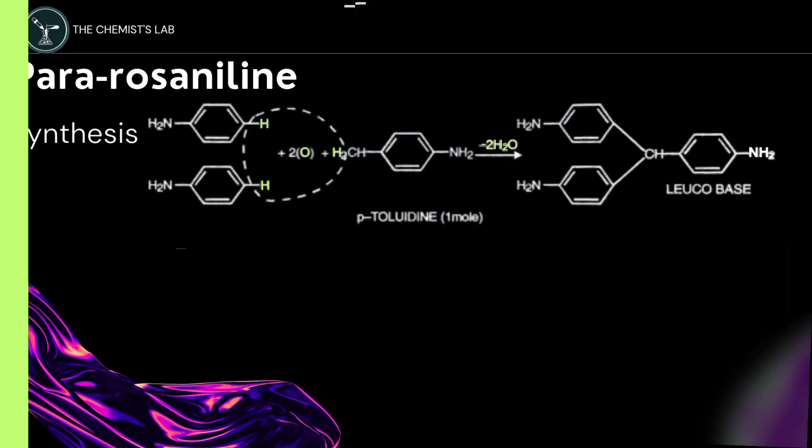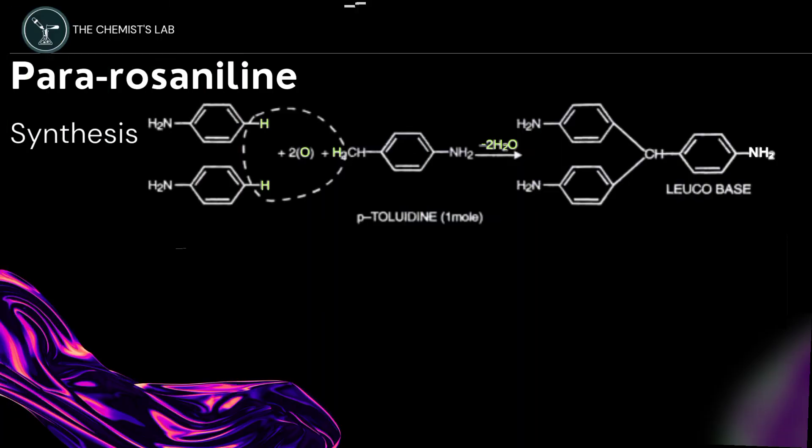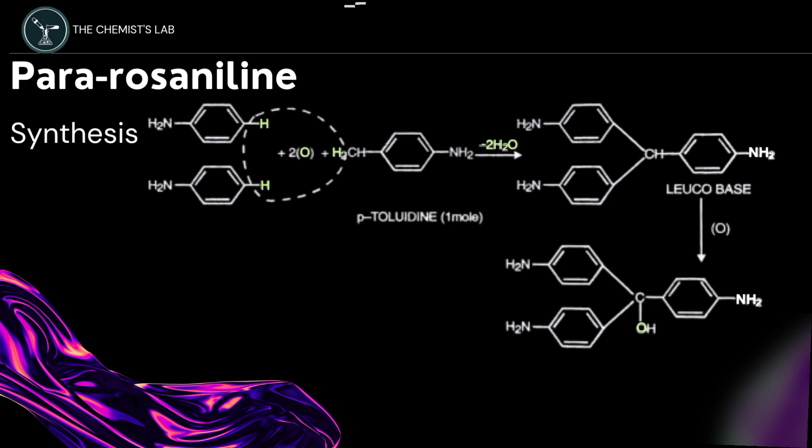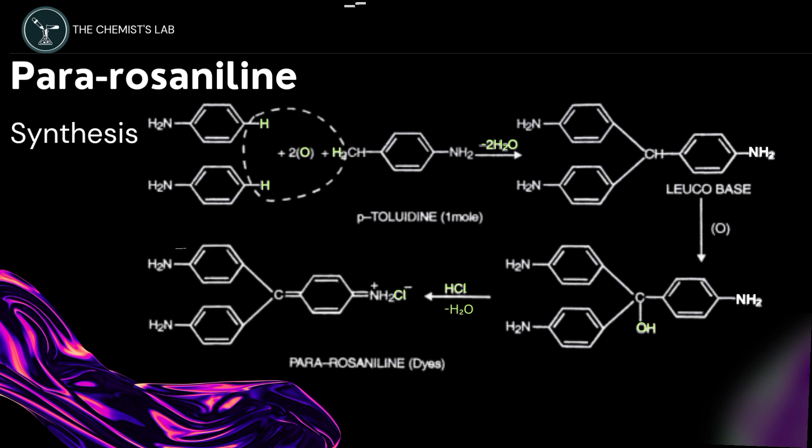Now let's look at the synthesis of parorosaniline. Oxidation of aniline and paratoluidine gives a leukobase by the elimination of a water molecule. The leukobase is then oxidized and treated with hydrochloric acid giving parorosaniline. This step is similar to the synthesis of malachite green.